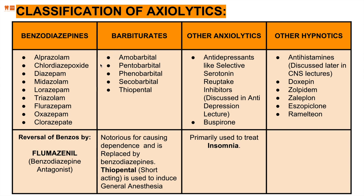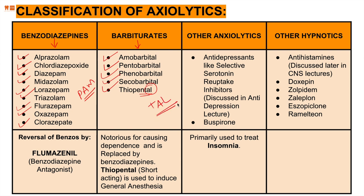Classifying anxiolytics by name: benzodiazepines include alprazolam, diazepam, midazolam, lorazepam, triazolam, flurazepam, oxazepam, and the two chloro-compounds — all ending in PAM. Barbiturates end in TAL: amobarbital, pentobarbital, phenobarbital, secobarbital, and thiopental. Other anxiolytics include antidepressants and SSRIs in the next lecture, buspirone as a newer drug, and other hypnotics including antihistamines, doxepin, zolpidem, and zaleplon.